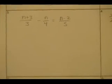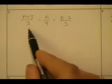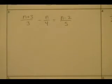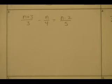Alright, let's do another problem. I have another one with a little problem here. I've got a 3, a 4, and a 5. We're not looking at the numerators yet, just worrying about the denominator. What's the LCD of 3, 4, and 5? Well, the LCD of 3 and 4 is 12. The LCD of 3, 4, and 5 would be 60.